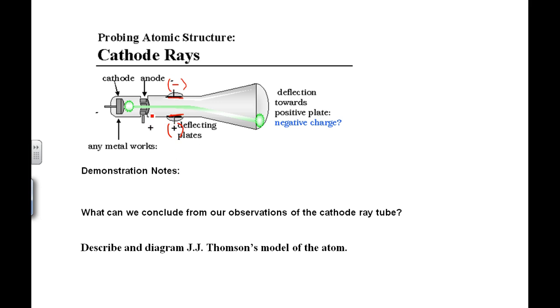And one of them was positively charged, and one of them was negatively charged. Alright, and as he passed this beam of what we know now as electricity, but he didn't know that yet, as he passed it through this tube, it bent towards the side that was positive and away from the side that was negative.